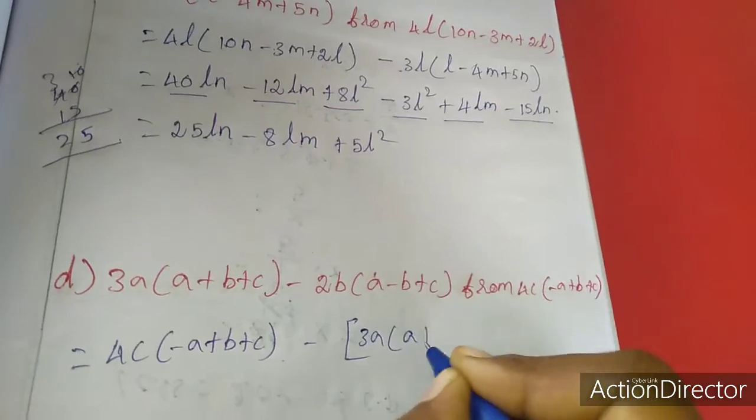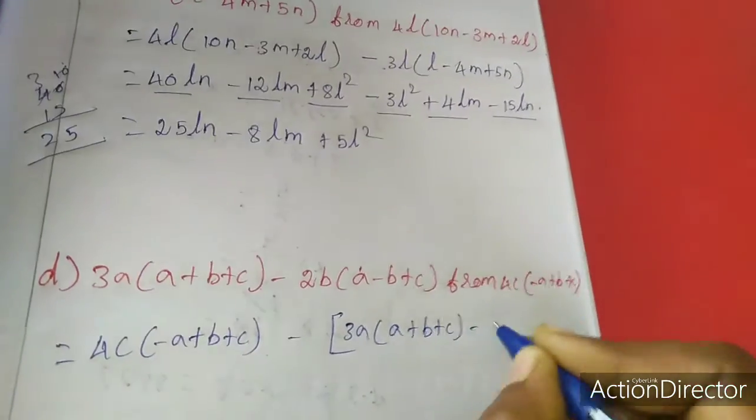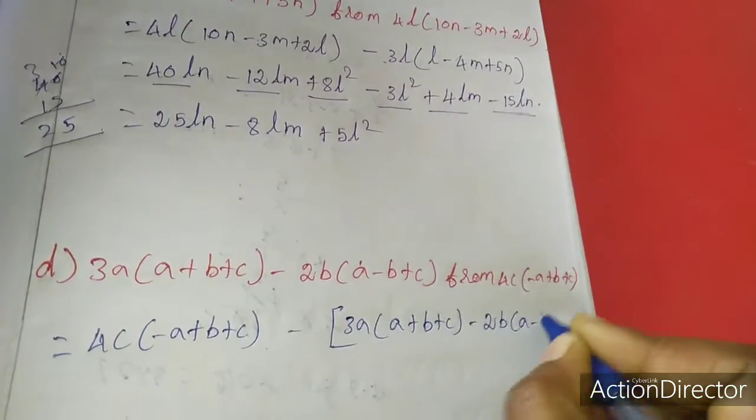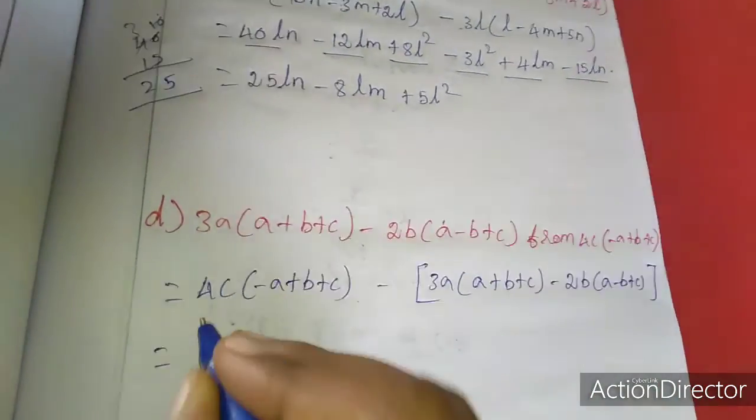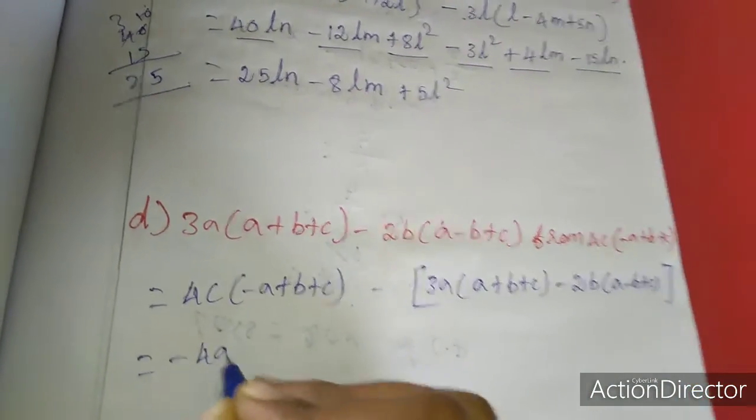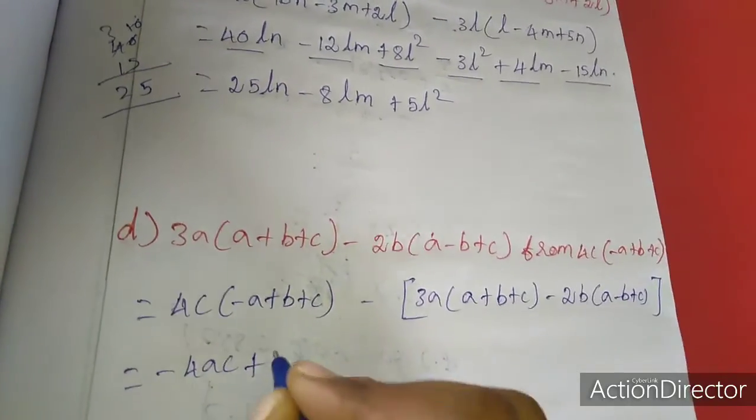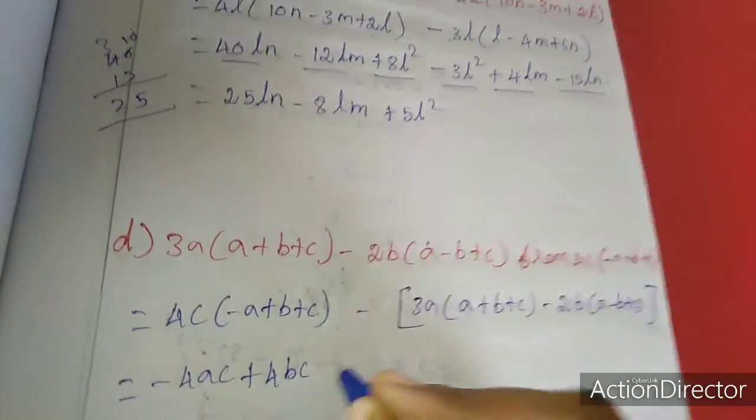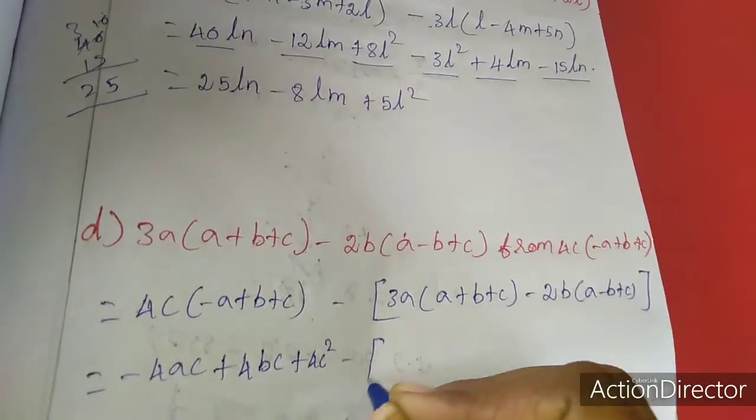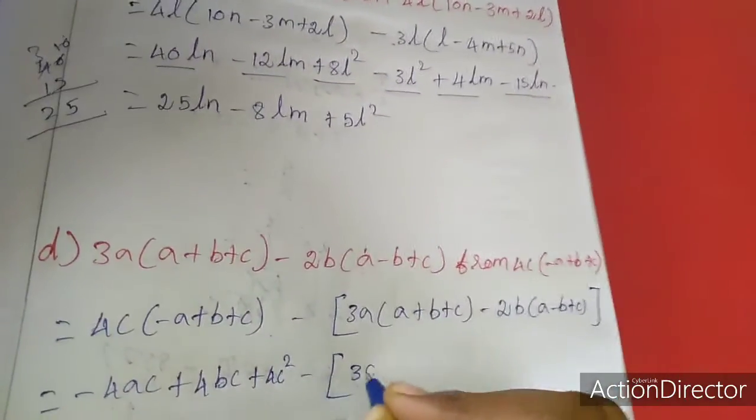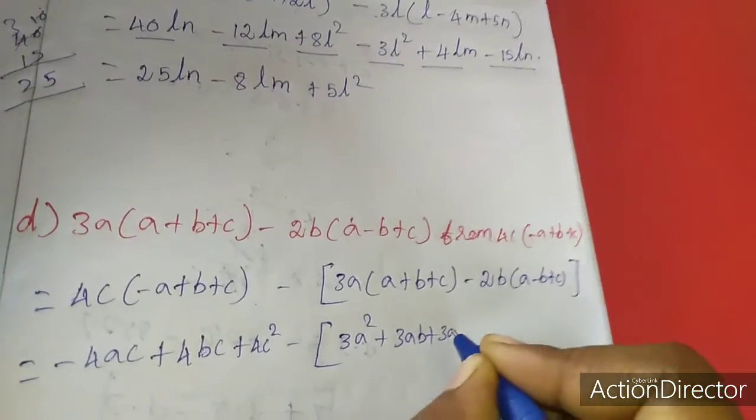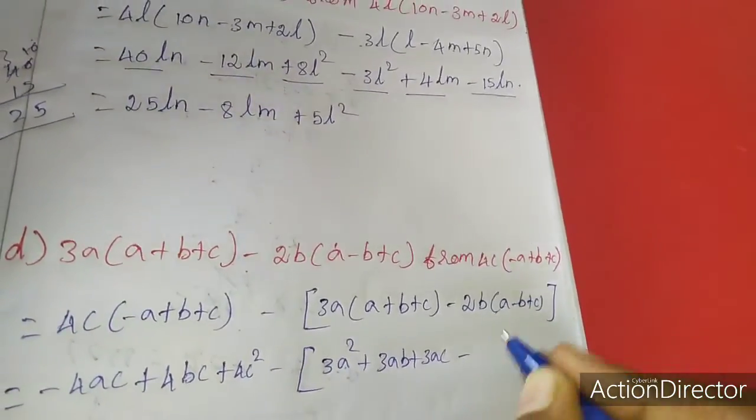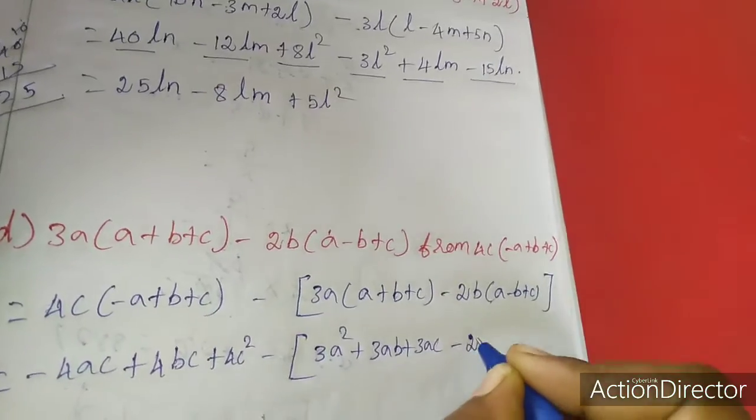First the bracket cancels out, multiply by minus: -4AC + 4BC + 4C². Minus this, multiply by 3: 3A² + 3AB + 3AC. Minus multiply by 2: 2AB plus 2B² minus 2BC.